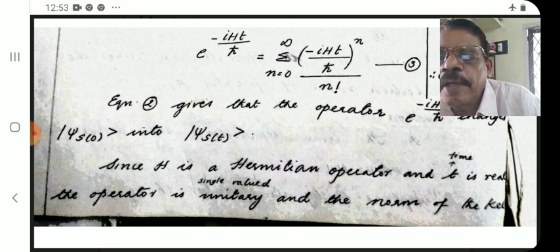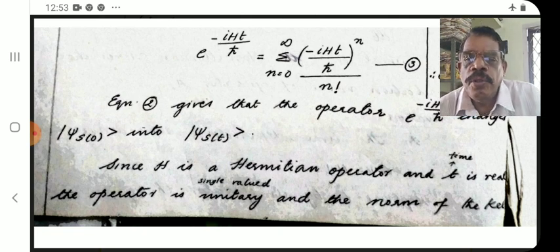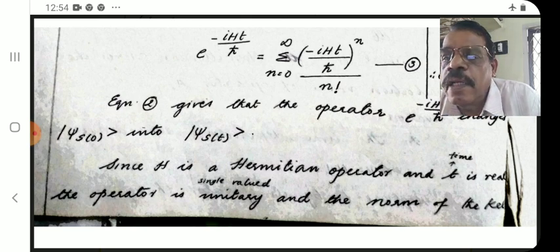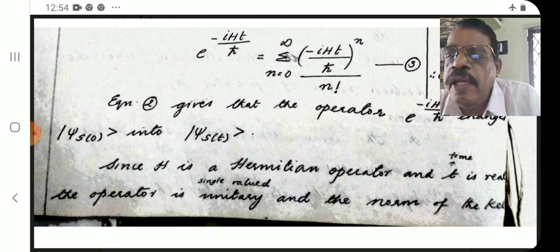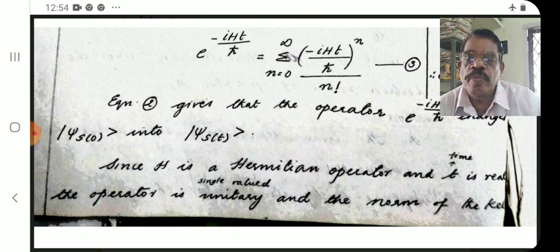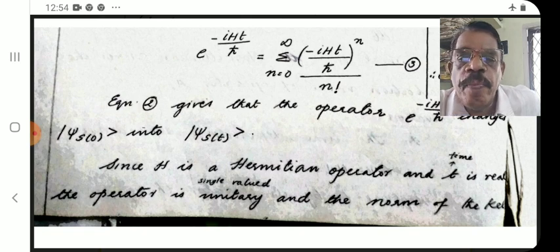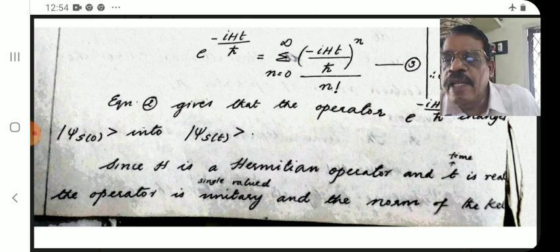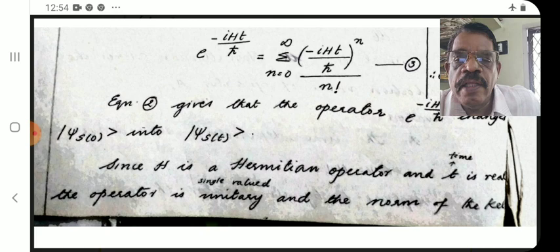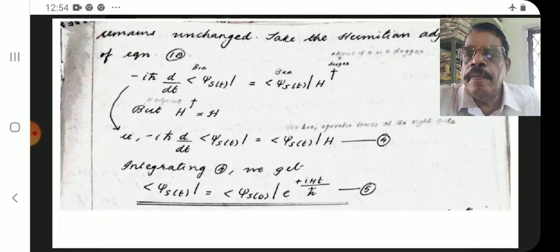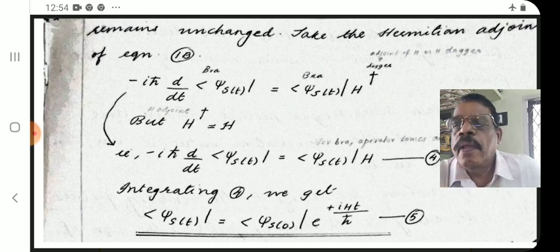The time evolution operator T is unitary. Since H is a Hermitian operator and t is real, the operator e^(-iHt/ℏ) is unitary and single-valued. The norm of the ket remains unchanged.